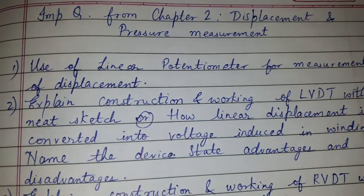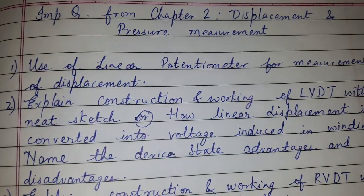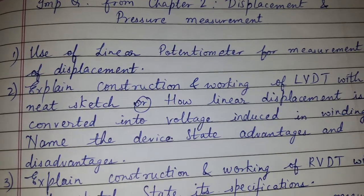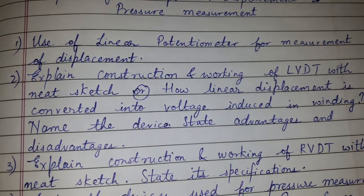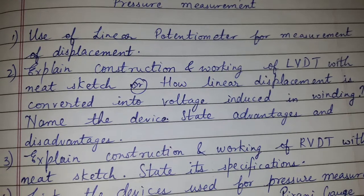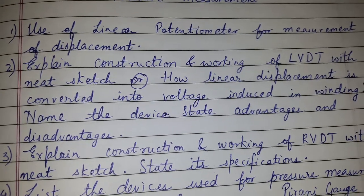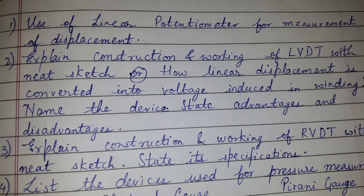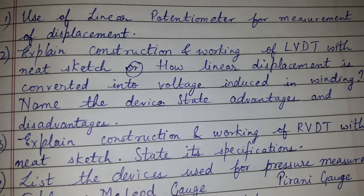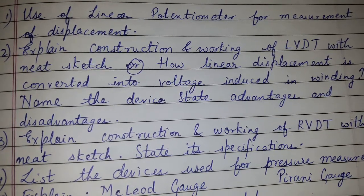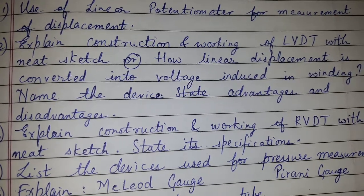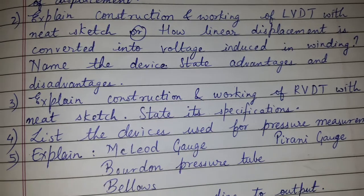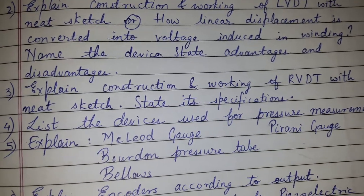Today's topic of discussion is important questions from Chapter 2: Displacement and Pressure Measurement. Topics include: use of linear potentiometer for measurement of displacement, and explaining the construction and working of LVDT with a neat sketch. It can also be asked indirectly — how linear displacement is converted into voltage induced in the winding, name the device, and state its advantages and disadvantages.